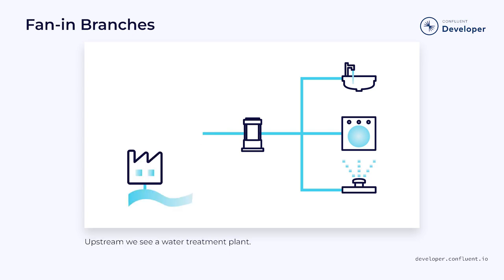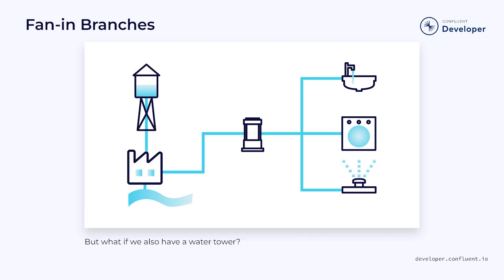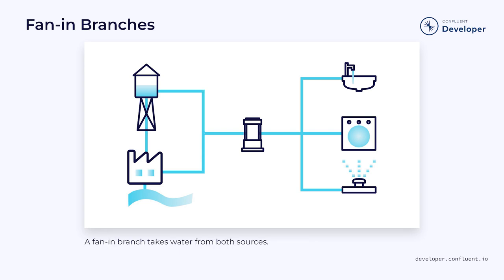However, fan-in branches where multiple pipes join into a single one are less obvious because they tend to exist upstream where the average person won't see them. For example, a local water supply might have a treatment plant that draws water from the river. After treatment, some of it will be sent downstream for immediate use, but some might be sent to a reservoir for peak usage. This means we now have two possible water sources, and in order to draw from both, we need to introduce a fan-in style branch where two pipelines are merged into one.